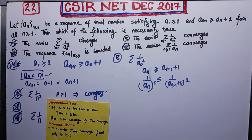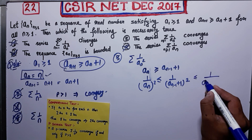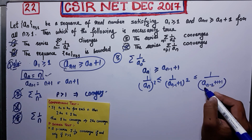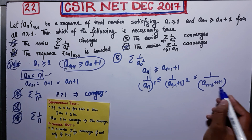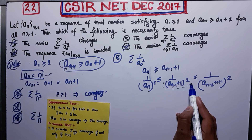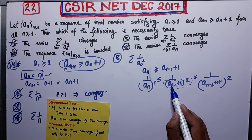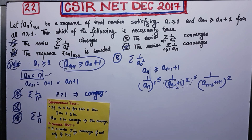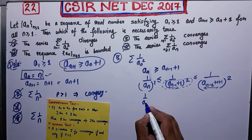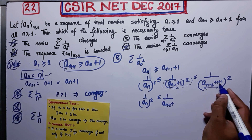Now, in place of a_{n-1} we can substitute a_{n-2} + 1 using the same recurrence. Decreasing the denominator increases the whole quantity, so the inequality is not affected — we are placing a smaller number than a_{n-1}, which keeps the inequality valid. We can continue doing this at every step, writing a_{n-3}, a_{n-4}, and so on.